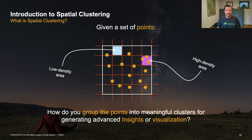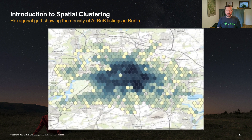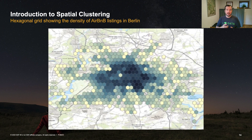The advantage of spatial clustering is that you can use it for analytics — it's important to know for certain areas whether there's a high or low density of certain locations. You can also use it for visualizations. One example I occasionally show is visualizing Airbnb listings in Berlin. If you just plot them as points on a map, you see nothing because there are 20,000 points and everything looks crowded. Instead, I applied hexagonal clustering to the point set and colored the hexagons according to point density, so you can immediately see the neighborhoods with the highest density of Airbnb listings.